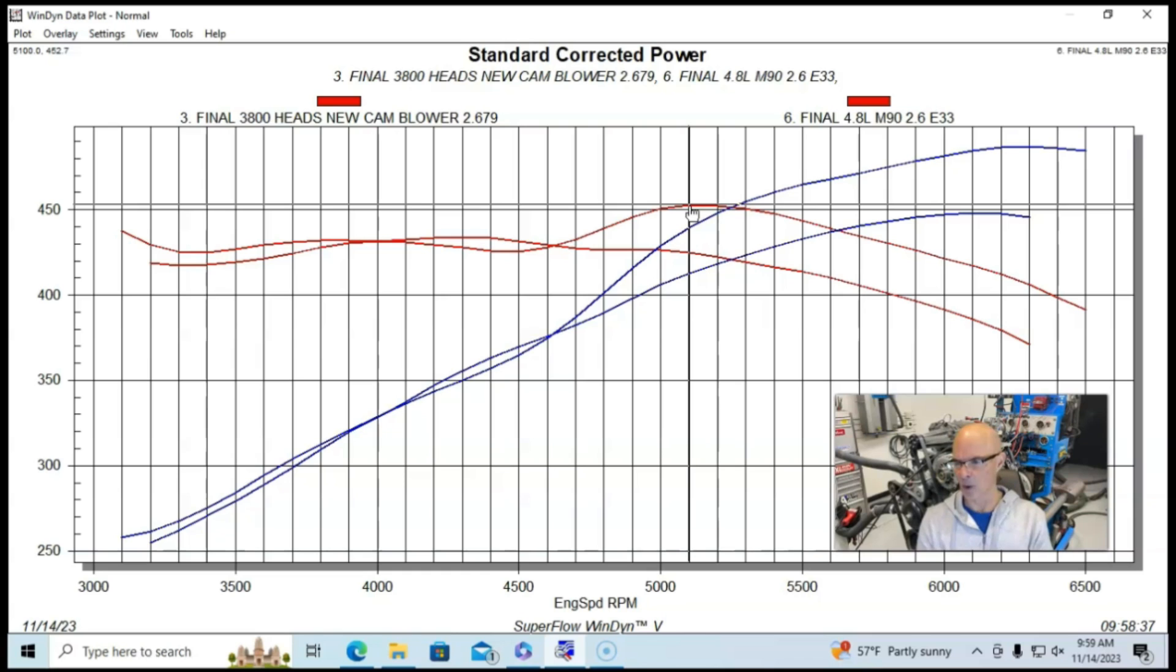And I honestly think that the cam is probably a little bit wilder on the smaller displacement motor than the Truck Norris cam is on the larger displacement motor. So there's a lot of things to discuss here.